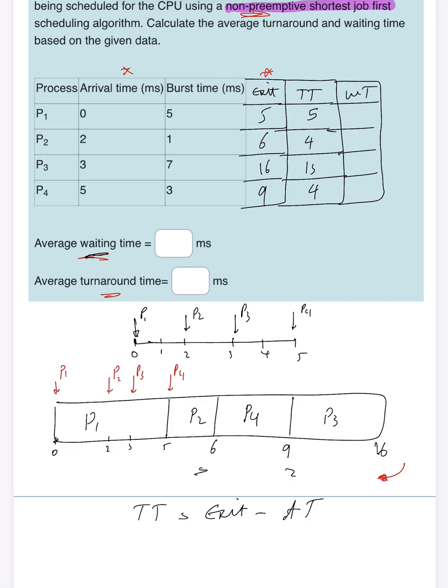The next column I need is waiting time, which by definition is turnaround time minus burst time. It means I need to subtract these two columns. So 5 minus 5 is 0. It makes sense because P1 didn't wait at all. As soon as it arrived, it got CPU time for five milliseconds and finished.